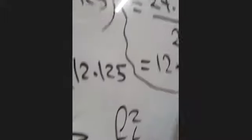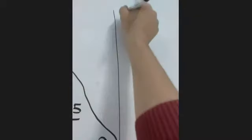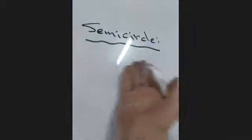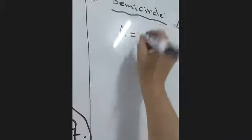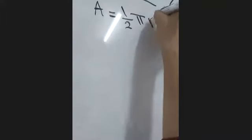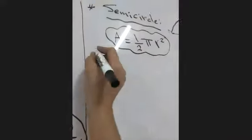Now we have a new concept: the semi-circle. A semi-circle is half of a circle. The area of a semicircle is half the area of a full circle: A = ½ × π r². This formula is used for half circles, while π r² is used for the whole circle.